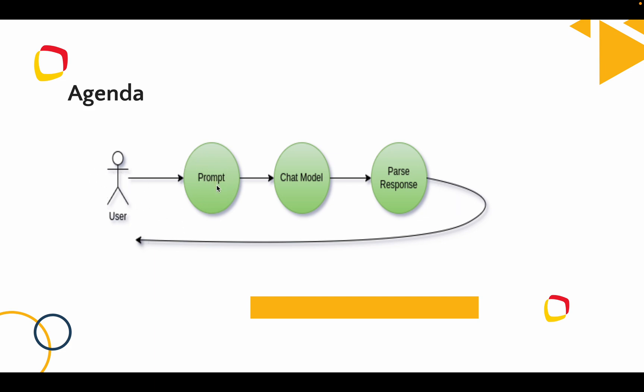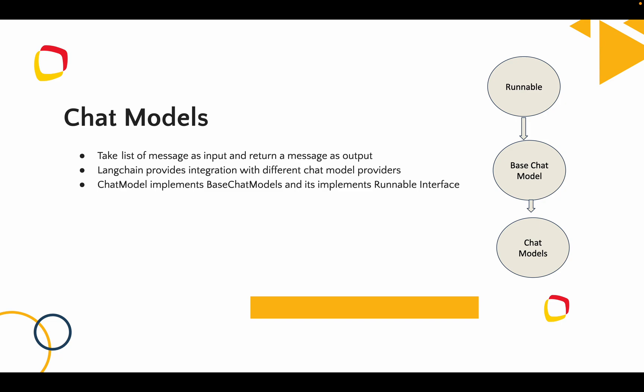We have already discussed prompt templates, and now we can discuss chat models and parsing responses. A chat model — we can consider an LLM as a chat model — it accepts a set of instructions and returns a message as a string output. LangChain provides a lot of LLM models like Anthropic, OpenAI, LLMs from AWS, and LLMs from Azure.